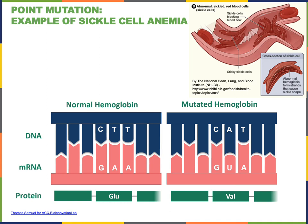This change in the primary structure of the protein has an effect on the secondary and tertiary structures of the resulting hemoglobin protein, which causes hemoglobin to clump, forming fibrous strands within erythrocytes. The resulting erythrocytes then become sickle-shaped, clumping together more easily, breaking more easily, and blocking the flow of blood through the blood vessels, leading to the symptoms of anemia from a low oxygen-carrying capacity of the blood, as well as other symptoms of sickle cell disease resulting from disruption of blood flow through small vessels.